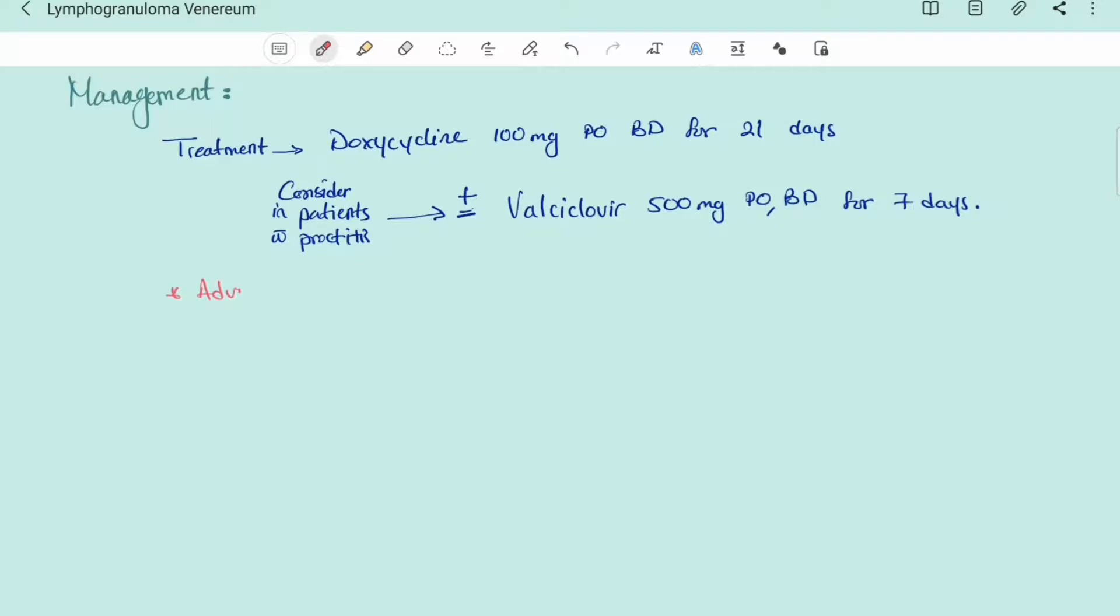The management of lymphogranuloma venereum consists of treatment with doxycycline, 100 mg orally twice a day for 21 days. We can also consider in patients with proctitis giving valacyclovir 500 mg orally twice a day for 7 days, as herpes simplex virus can be the cause.